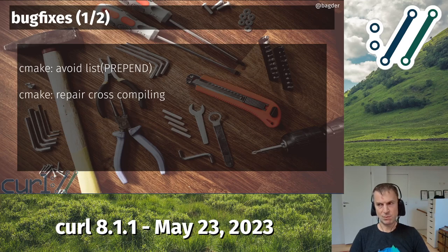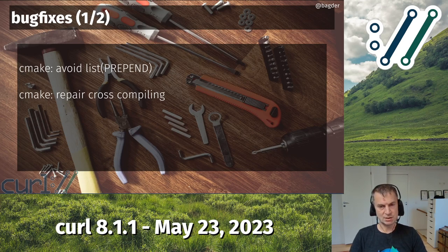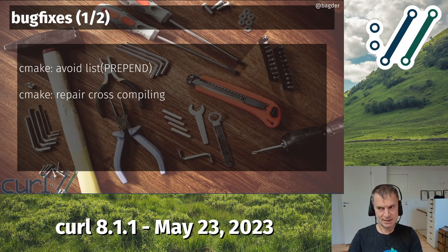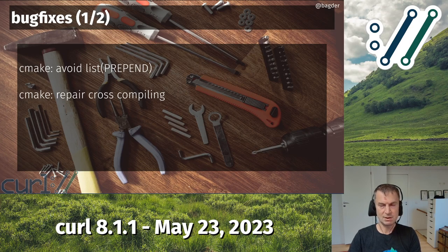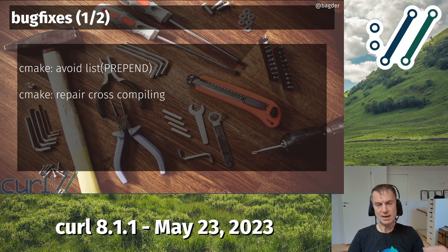We also repaired a cross-compiling regression. It was another little enhancement of the cmake build that we did that accidentally was not done properly for when you cross-compile using cmake. Now that should be better again.